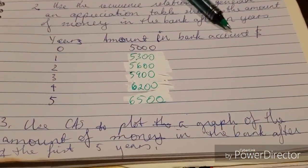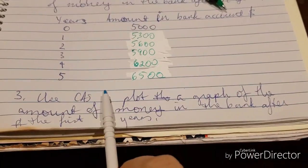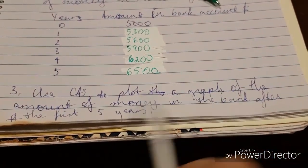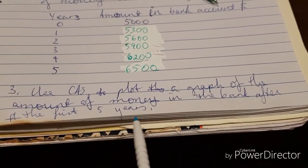Okay, let's go back to the question. So that's generated our appreciation table. Next part: use CAS to plot a graph of the amount of money in the bank after the first five years. All right, let's go back to our table.